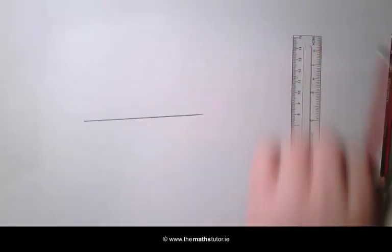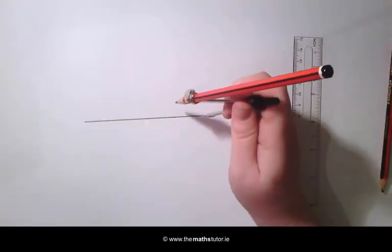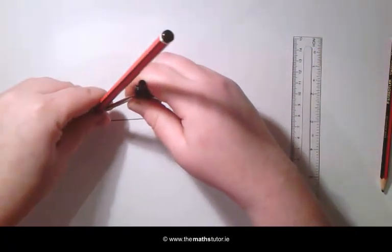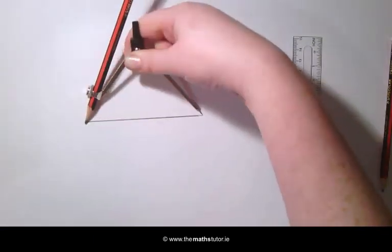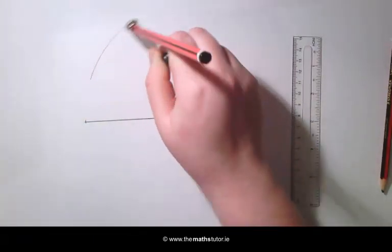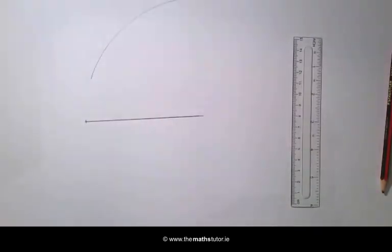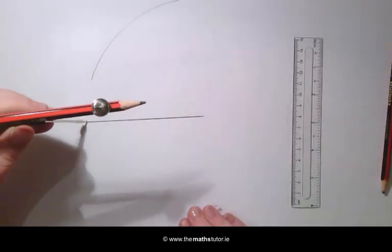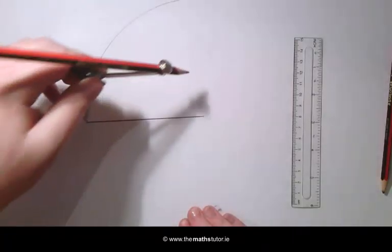Using our compass we are going to measure this length. Placing our compass at the end of the line we are going to draw an arc above it. Without changing our width we are going to do the same on the other side.